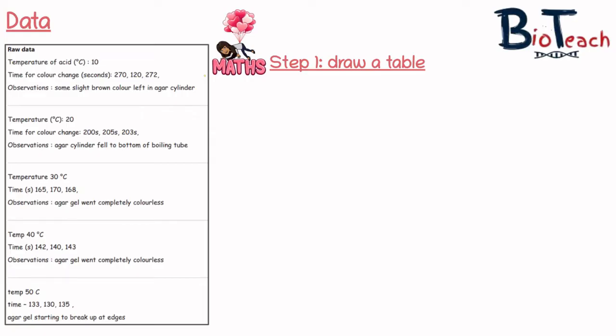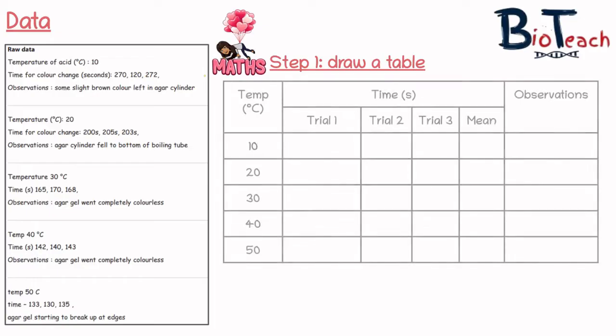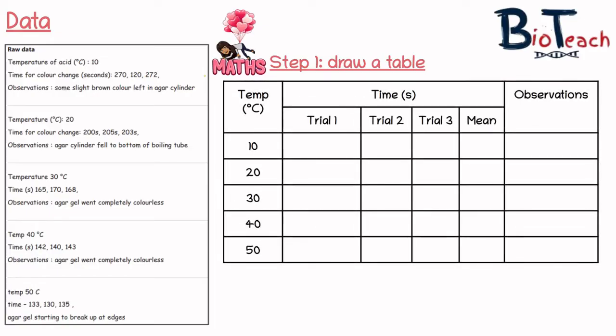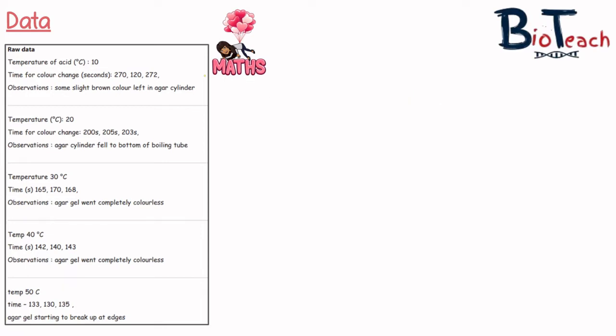Remember that we repeat experiments to obtain a more reliable mean, so that's probably another column you'd need in your table. The last column is observations — what they saw happen to the agar. So if I was to design a table, it would look something like this. Pay close attention to units: temperature in degrees Celsius, time in seconds for trial one, trial two, trial three, and the mean. The last column is for qualitative observations — what you're seeing when doing the experiment.